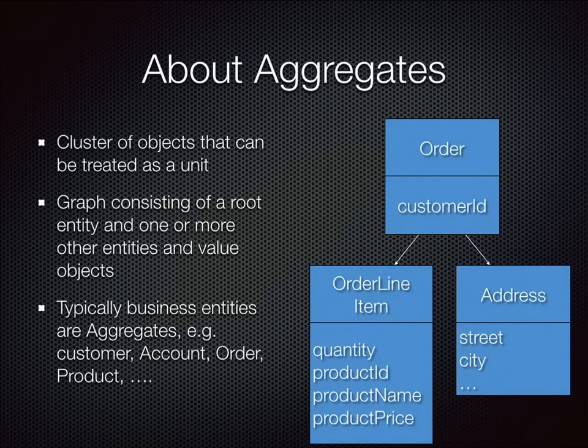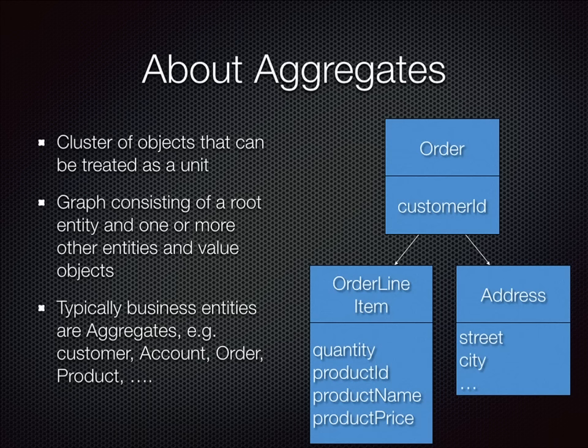Aggregates are a way of taking your domain model and breaking it up into chunks that can be treated as a unit. Among other things, it defines what it means to delete an order — when you delete an order, you also delete its line items and addresses. So that's the first benefit: it breaks the domain model up into chunks. Any time you can modularize your domain model, that's quite good. But there's actually some deeper meaning to it than that.